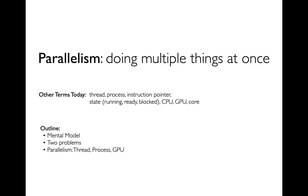To start I want to build a little bit of a mental model about how processes normally run on a CPU. Then I'm going to show you two problems that can crop up when we're running code — these have to do with wasting compute resources. Then we're going to show how we can solve these two problems with parallelism: thread parallelism, process parallelism, and GPU parallelism.